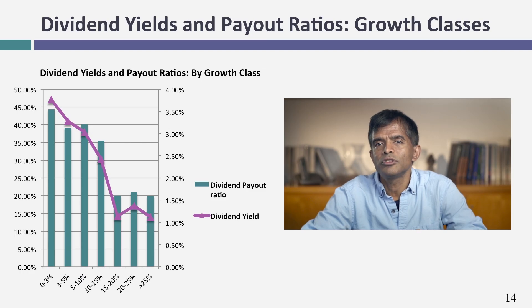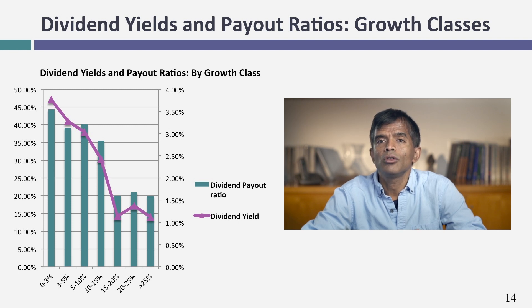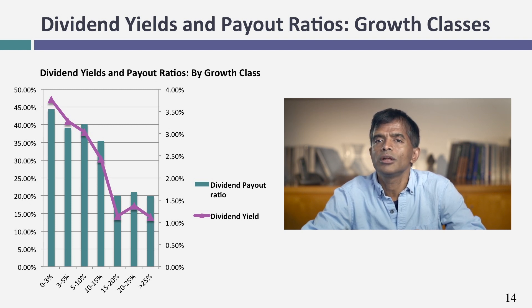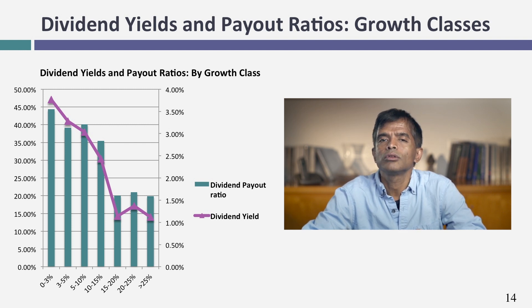Looking across companies, you see backing for this life cycle concept. I've broken down companies based on their expected growth — using analyst projections — and looked at what percentage of earnings companies within each growth class pay out as dividends, either as a payout ratio or dividend yield. No surprises: the higher the expected growth rate of a company, the lower the payout ratio and dividend yield tend to be. As companies' growth prospects improve, you should expect them to pay out less in dividends, buy back less in stock, and in general return less cash to their stockholders.